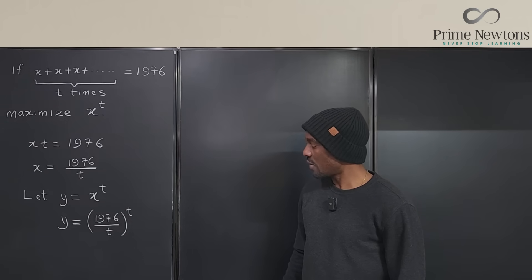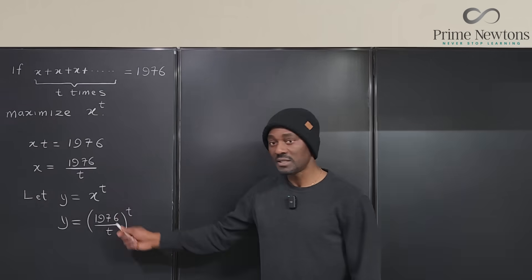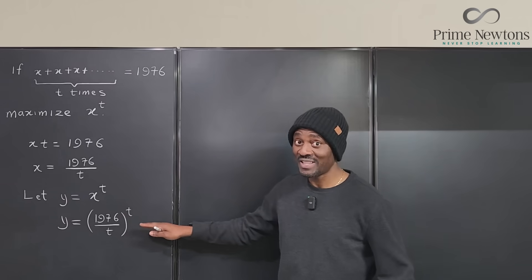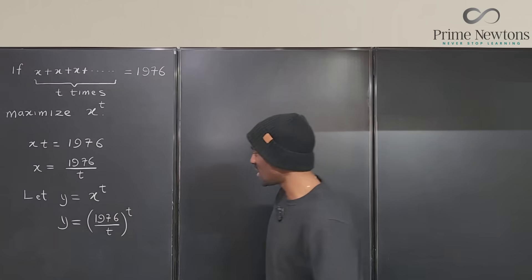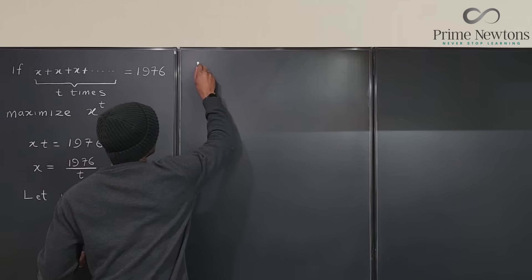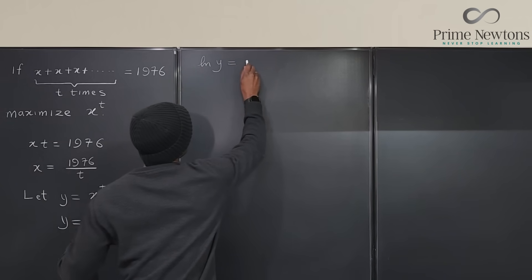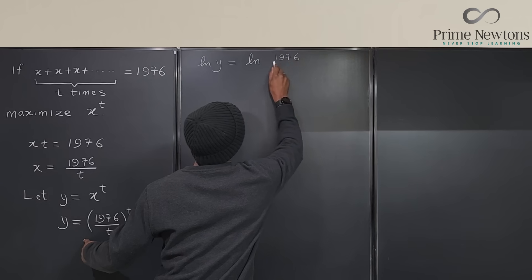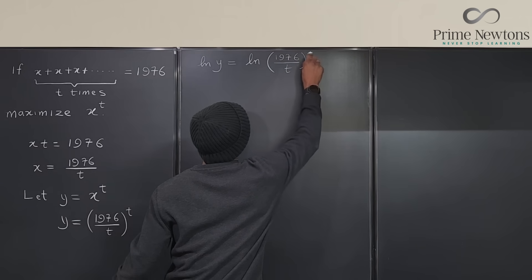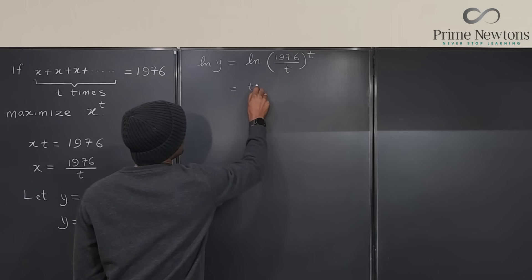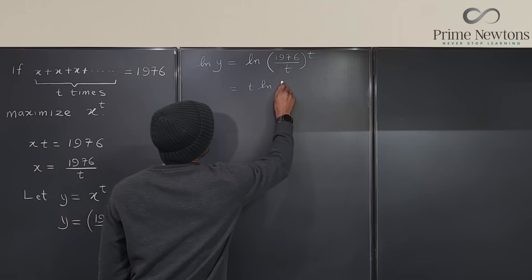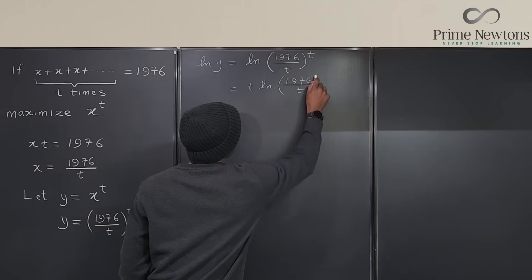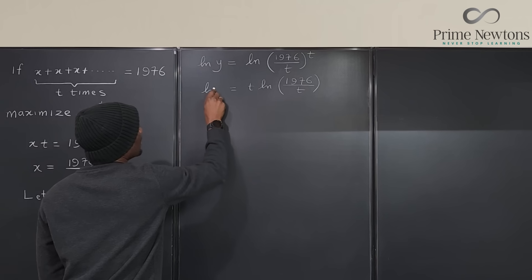So what we can do now is take the natural log of both sides because I want to do differentiation, and once you have an exponential function you want to take the natural log so you can easily differentiate using logarithmic differentiation. So we're going to say LN of Y must be equal to LN of 1976 over T raised to power T. This clearly gives you T times LN of 1976 over T.